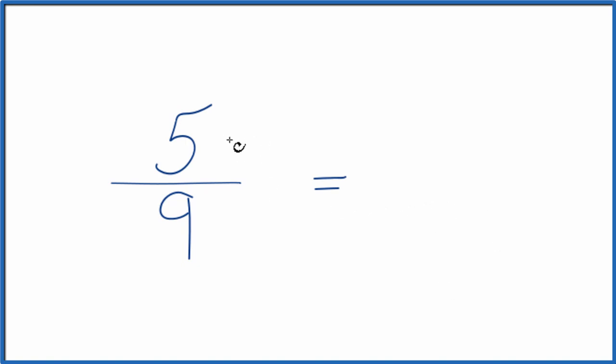I could multiply 5 ninths by 1. That would just give me 5 ninths. What if I multiplied it by 2 over 2? Because 2 divided by 2 is 1, so I'm just multiplying by 1.